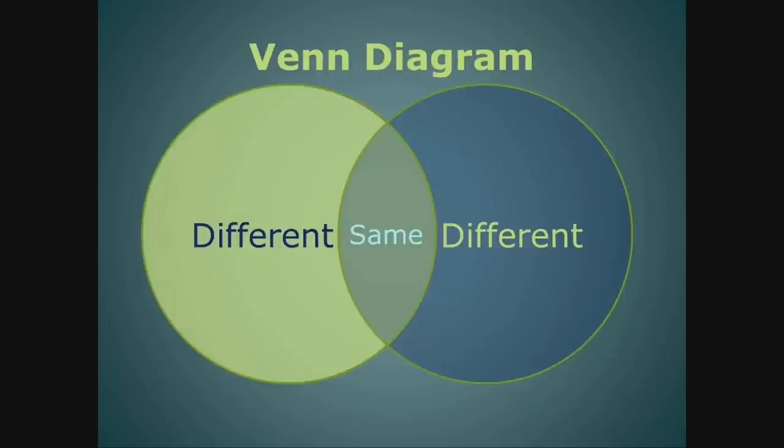Venn diagram. A Venn diagram is used to compare and contrast two things. When you compare two things, you look for things that are the same. In a Venn diagram, that is the middle where the two circles meet and overlap.